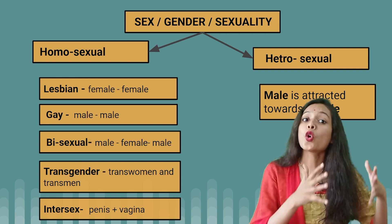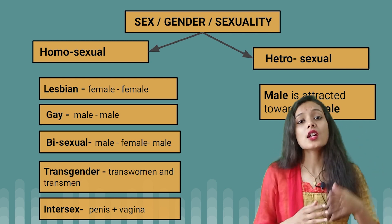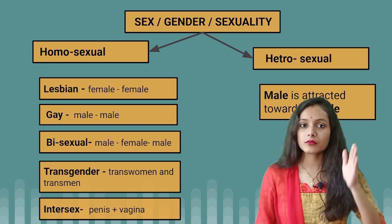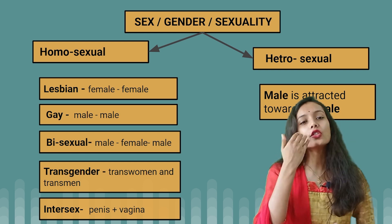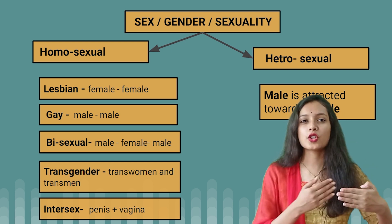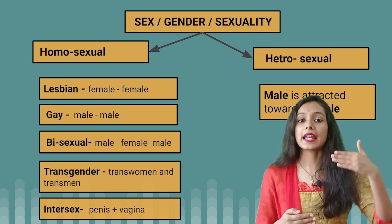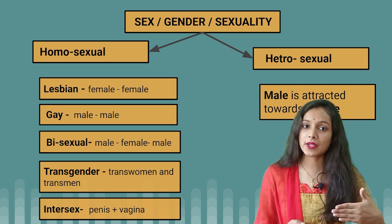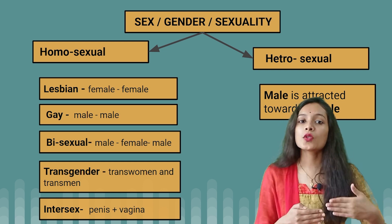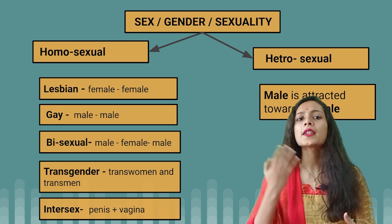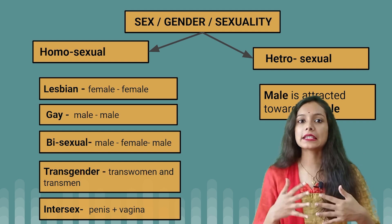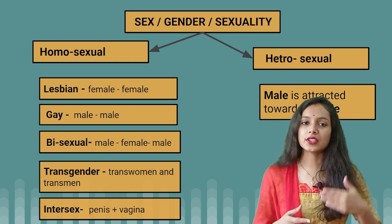When we talk about homosexuals, there are different categories. First of all, lesbian — lesbians are females who are attracted to females. Gay — males who are attracted to males are called gay.